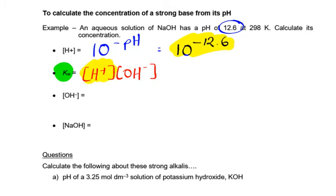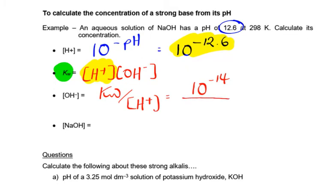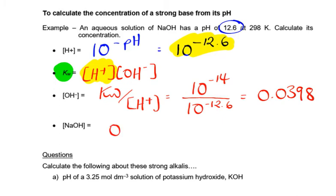We rearrange the Kw expression to get the hydroxide ion concentration: Kw divided by the hydrogen ion concentration. So that's 10⁻¹⁴ divided by 10⁻¹²·⁶, giving 0.0398 mol dm⁻³. That's the concentration of the hydroxide ions, and since they're in a 1:1 ratio with sodium hydroxide, the concentration of the sodium hydroxide is also 0.0398 mol dm⁻³.